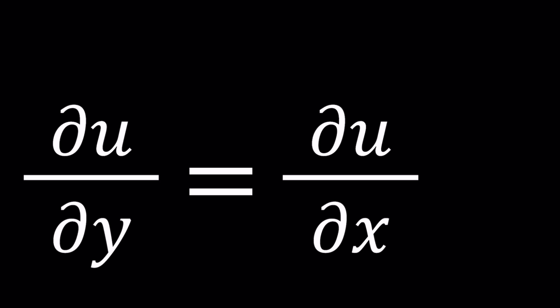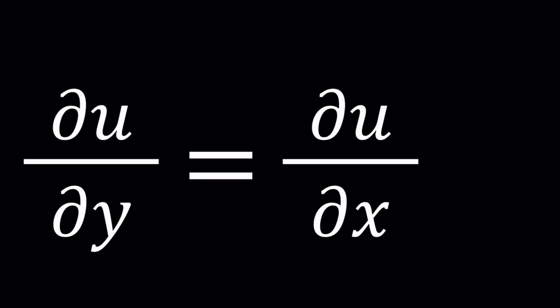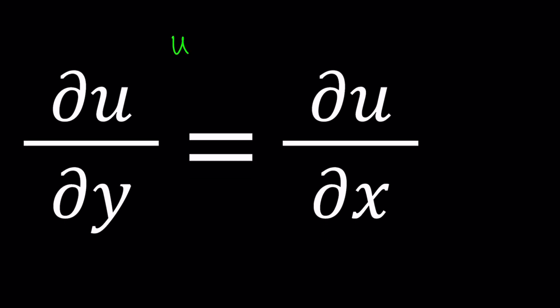You can only approximate or use numerical methods because with ordinary differential equations, we end up with constants from integrating. With partial differential equations, constants are functions. And we don't even know what functions they are. But this one is kind of interesting because we have a function u. u is a function of x and y, a function of two variables. That's what makes this a partial differential equation.